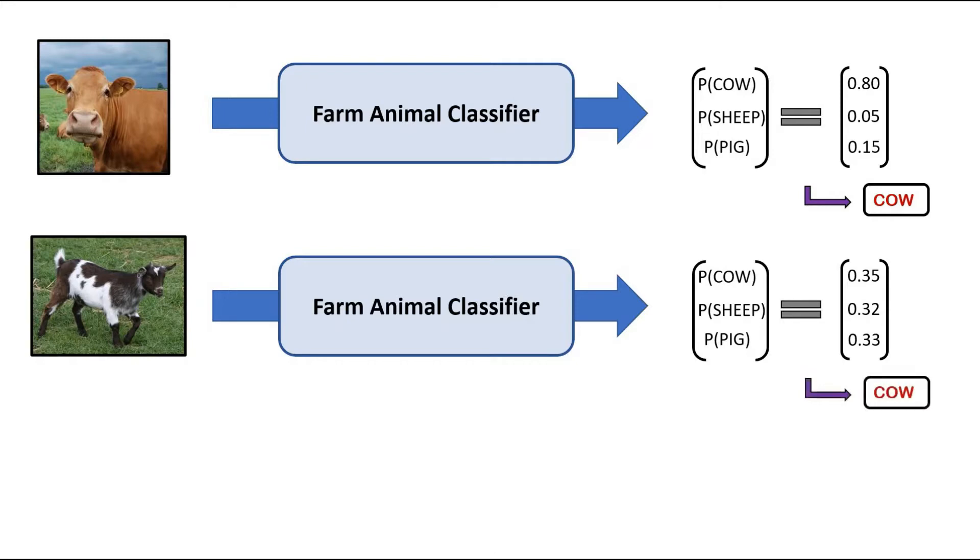Hence, the model concludes the input image is a cow because once again the cow class has the greatest probability assigned to it. However, as a human, I am not convinced by this result because the probabilities of the three animal classes are very similar and it just happens that in this instance, the probability of the cow class is slightly larger than the other two classes.